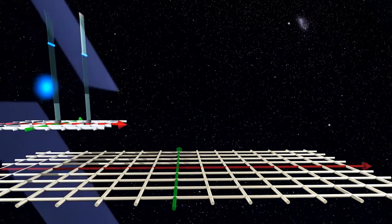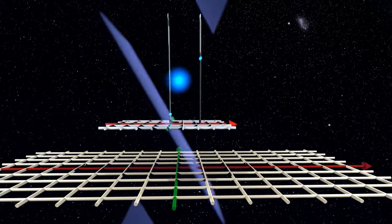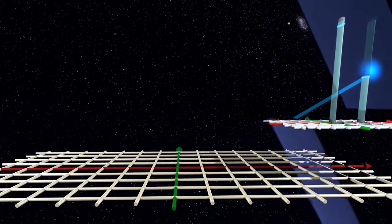The oblique light fronts show that different locations of the moving frame appear at different proper times.